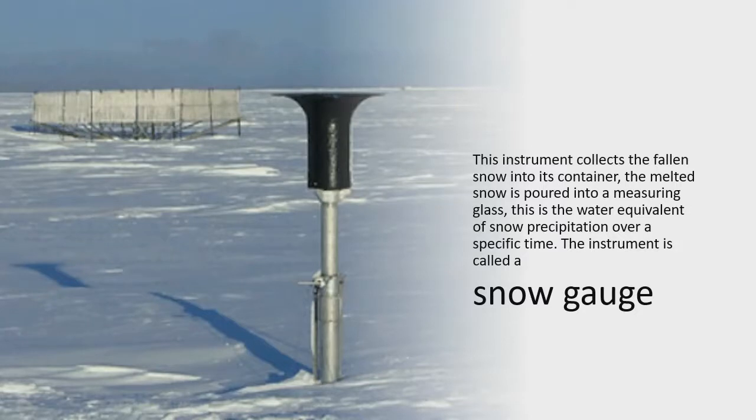This instrument collects the fallen snow into its container. The melted snow is poured into a measuring glass. This is the water equivalent of snow precipitation over a specific time. The instrument is called a snow gauge.